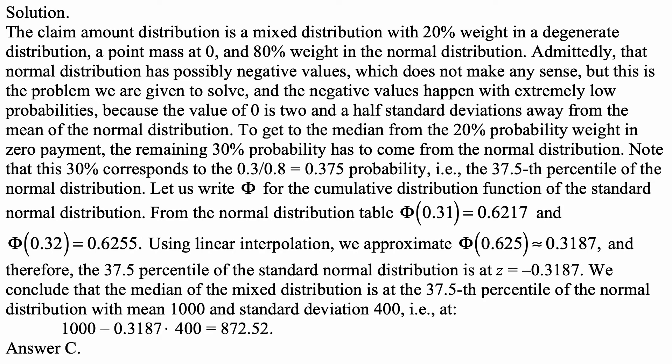Here is a solution. The claim amount distribution is a mixed distribution with 20% weight in a degenerate distribution — a point mass at zero — so a probability distribution which hits zero with probability one. That one is assigned 20% weight in the mixture, and 80% weight in the normal distribution as described in the problem.